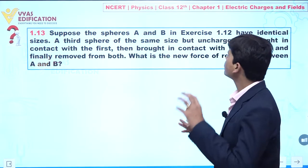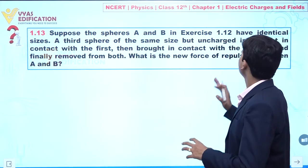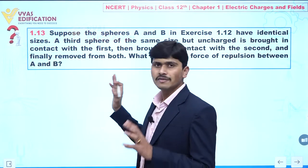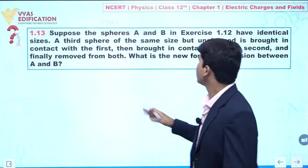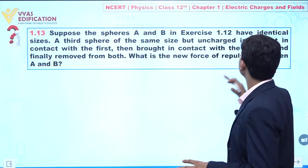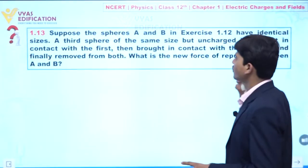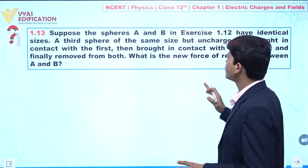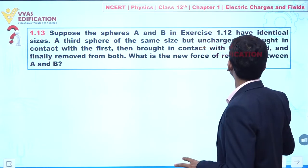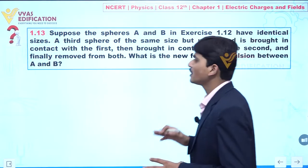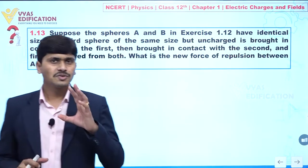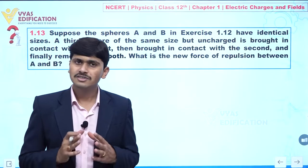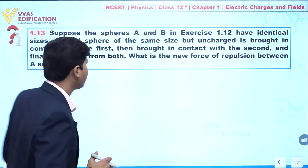A third sphere of the same size but uncharged is brought in contact with the first, then brought in contact with the second, and finally removed from both of them. What is the new force of repulsion between A and B? Let us try to understand the situation.